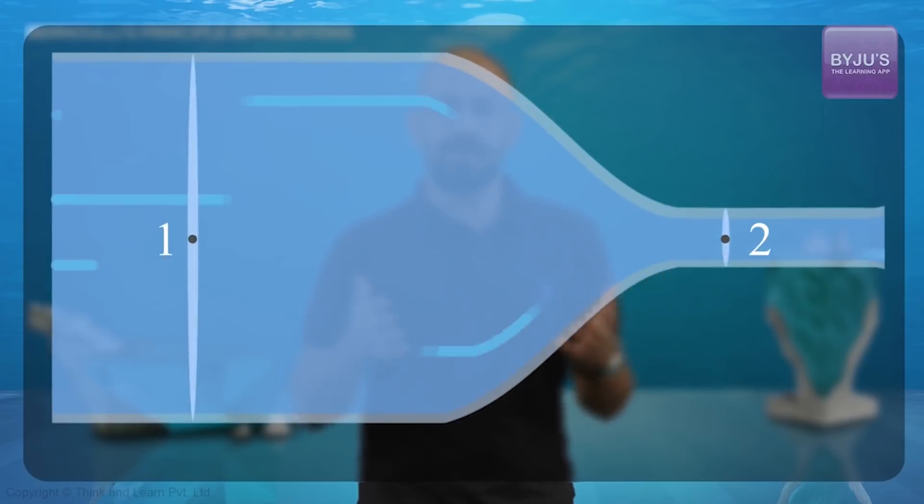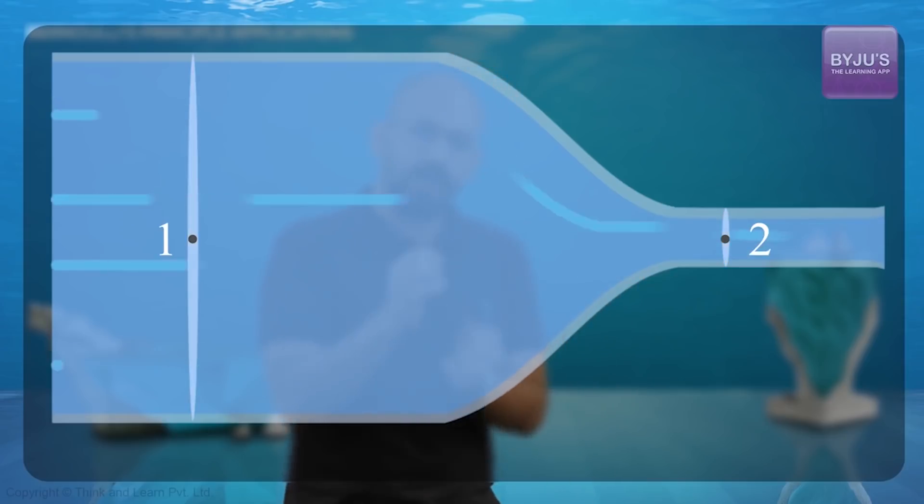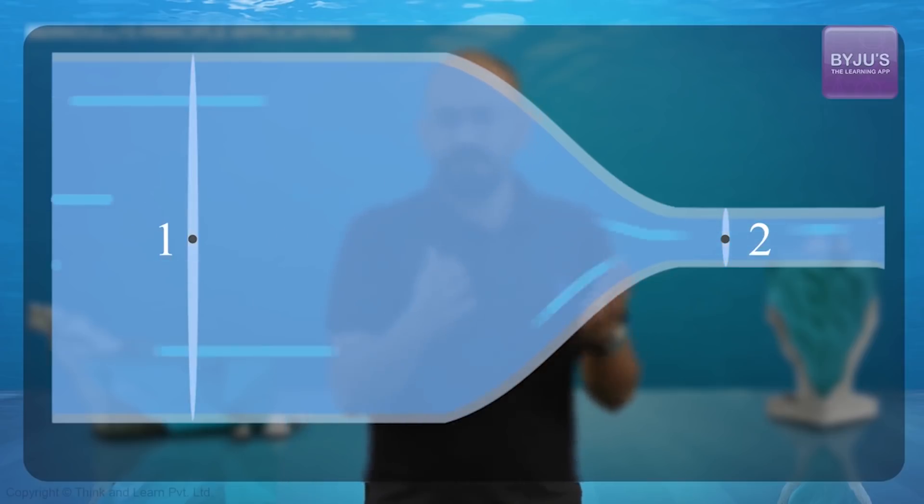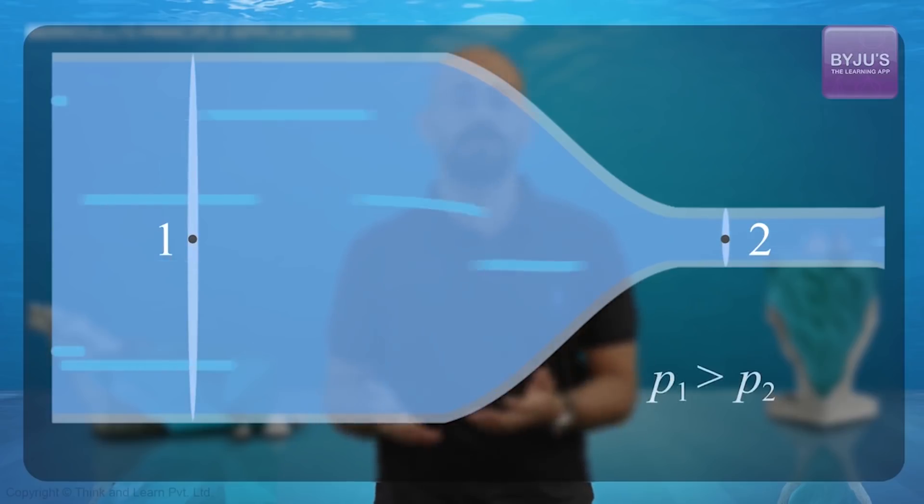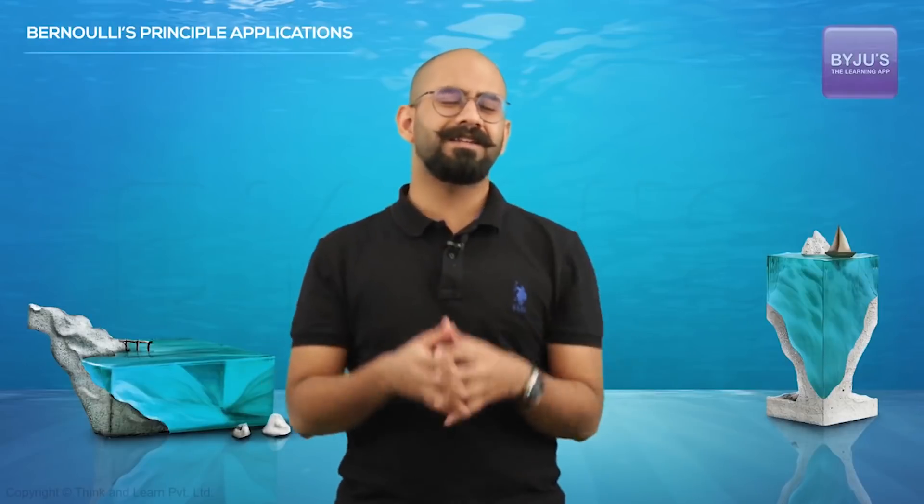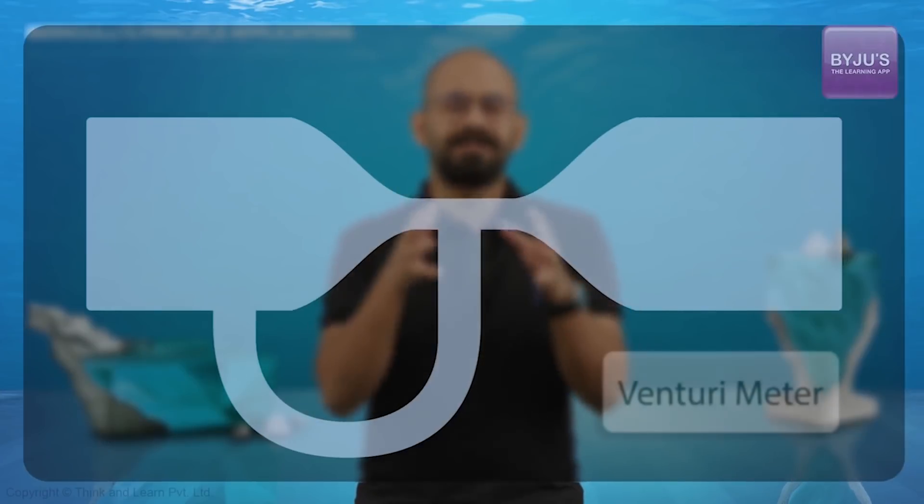So Bernoulli's equation basically tells us that when an incompressible fluid is flowing from a higher area of cross section to a lower area of cross section, the flow lines sort of get crowded and therefore the speed increases and of course the pressure reduces at that point. So this result is actually used in many real world applications and the most common of them all is the Venturi meter.